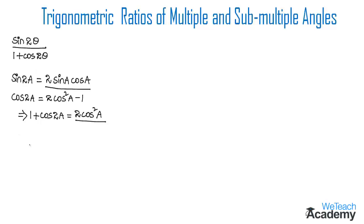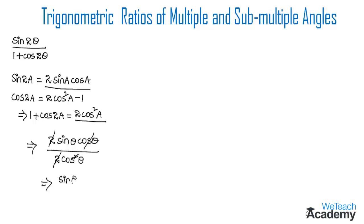Writing both formulas into the example, we get 2 sinθ cosθ in the numerator divided by 2cos²θ in the denominator. The 2 cancels from numerator and denominator, and cosθ cancels as well, leaving sinθ / cosθ, which is tanθ. So tanθ is the result for sin2θ / (1 + cos2θ).